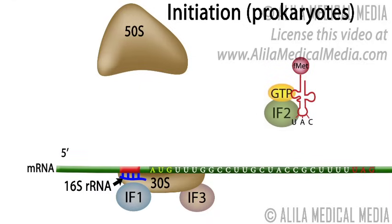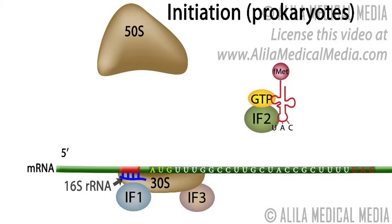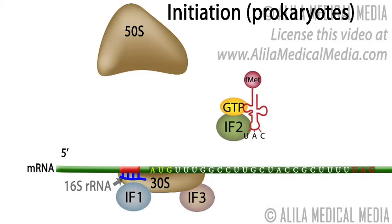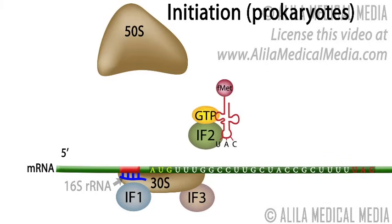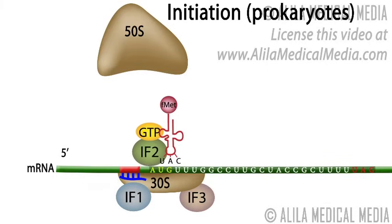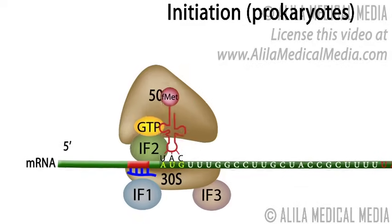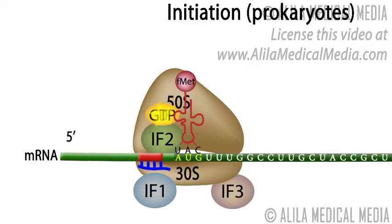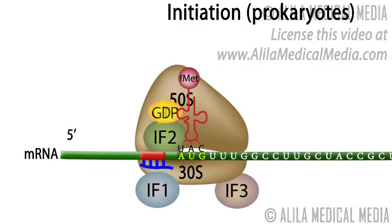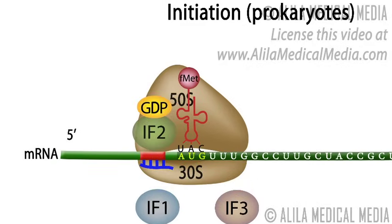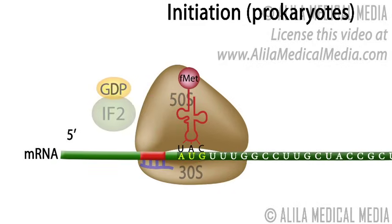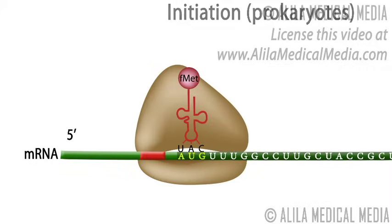Another initiation factor, IF2, brings in the initiator tRNA charged with the initiator amino acid, formyl methionine. The large ribosomal subunit then joins the complex and all initiation factors are released.